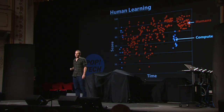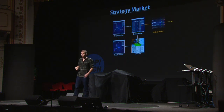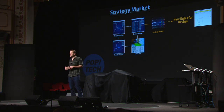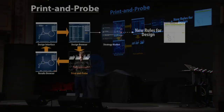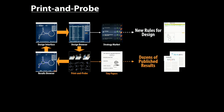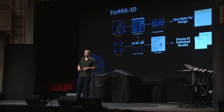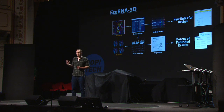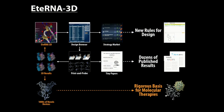I want to give you a quick view of the future. The first thing is we want to understand what the players are doing, so we're creating something called the strategy market, which allows the community with machine learning algorithms to identify strategies that work best to create new folding rules. At the same time, we're massively increasing experimental throughput with new assays allowing us to test 20,000 hypotheses per week. We hope elite Eterna players will eventually write and publish papers about their findings, and we're developing new 3D user interfaces to allow players to design thousands of working RNA devices and build a rigorous basis for next-generation molecular therapies.